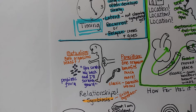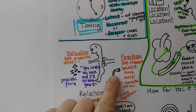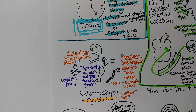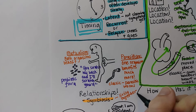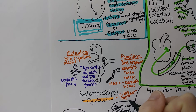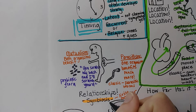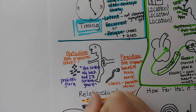Of course, a lot of times we just notice the bad things: if tapeworms get out of control, they can lead to malnourishment and actually weaken the host to the point where they get what we call secondary infections. It's never quite as black and white as the terms might suggest.